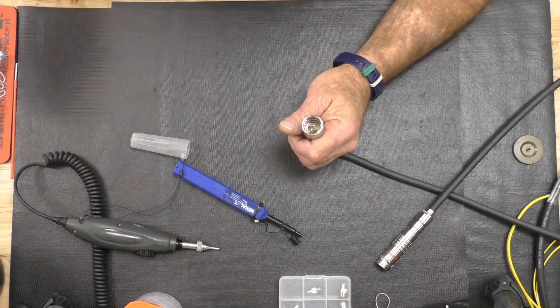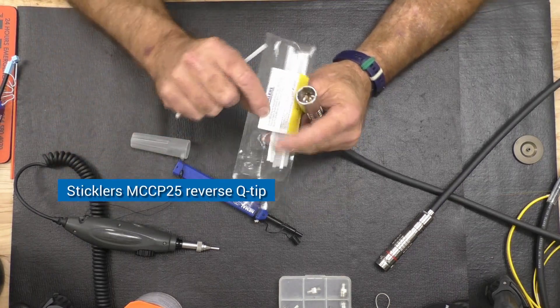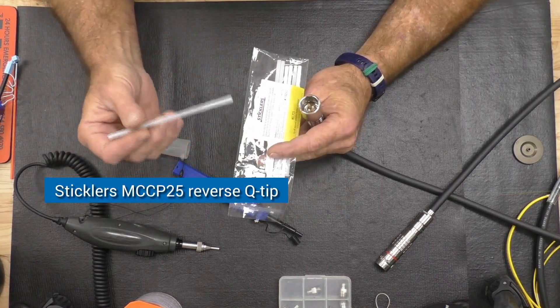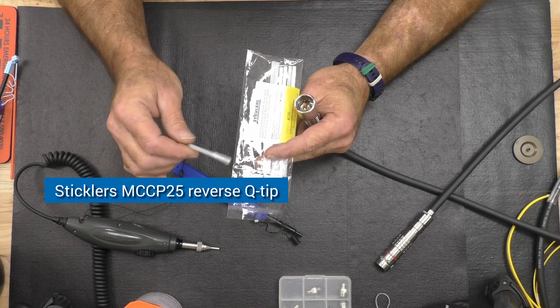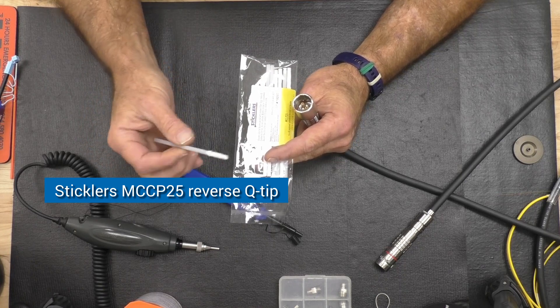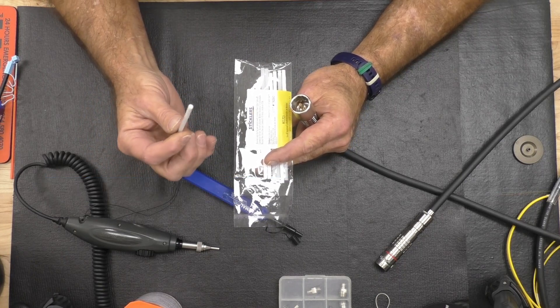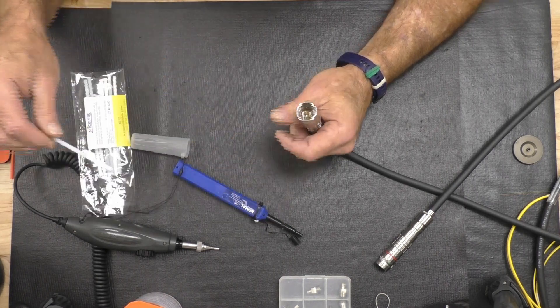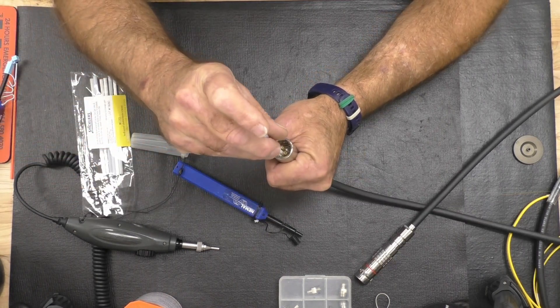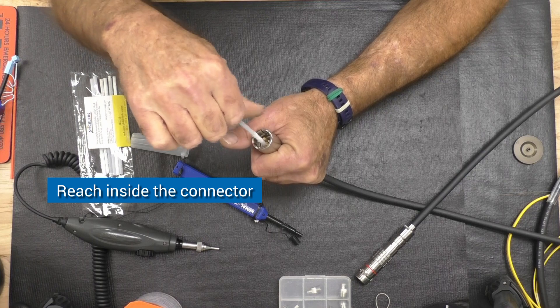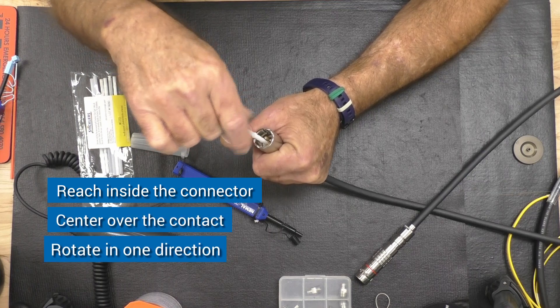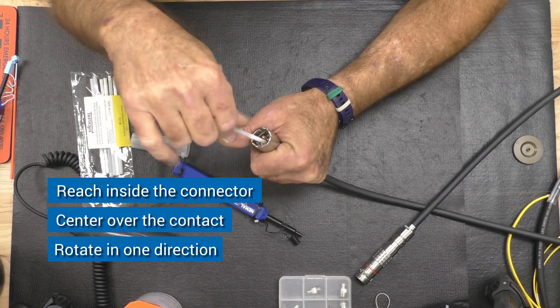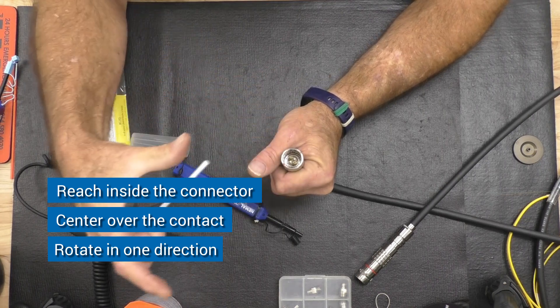The other option is the Stickler cleaning tip. Stickler makes the MCCP 25, a reverse Q-tip design. The cleaning material is embedded in a tube. It gives you the ability to reach down inside the connector and center over the contact, rotating in one direction, say clockwise, always moving the dirt from the center to the outside.